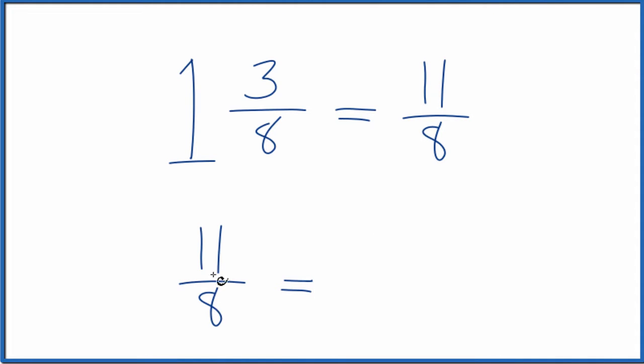We get a mixed number. So 8 goes into 11 one time with 3 left over. And we just bring the 8 across, so 11/8 equals 1 and 3/8. And that's what we started with.